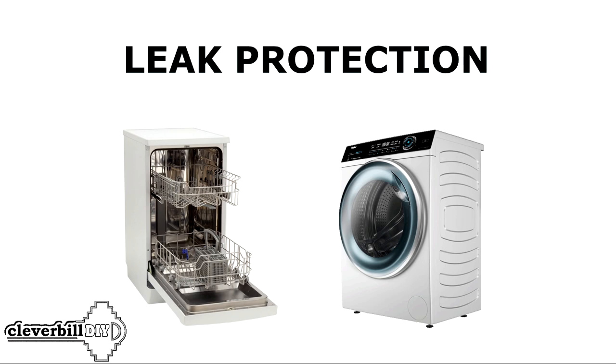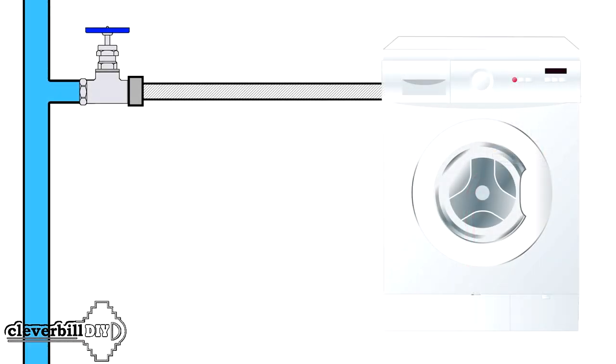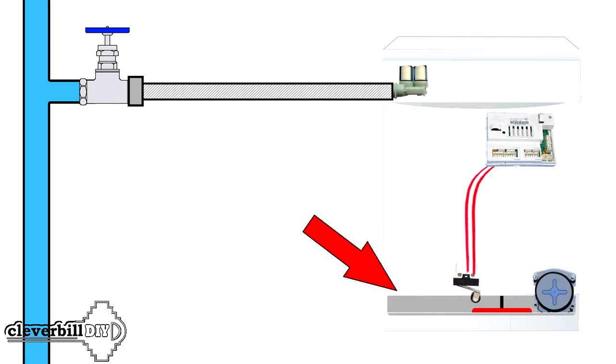The leakage protection system can be divided into two types. The first type, also called incomplete or partial protection, is as follows: in the washing machine or dishwasher in the lower part of the case there is a special tray for collecting water in the event of a leak of any of the equipment components.